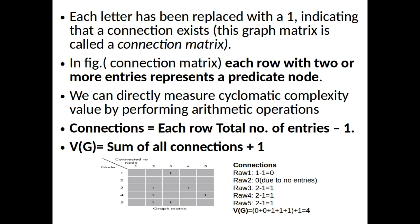The connections per row equals the number of connection entries minus one. So connections in row one: one entry minus one equals zero. Row two has no entries, so connections equal zero. Row three has two connections: two minus one equals one. Similarly, row four has one connection, and row five has two minus one equals one connection.